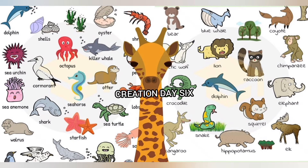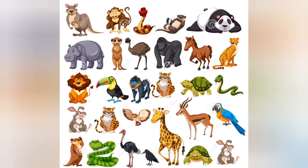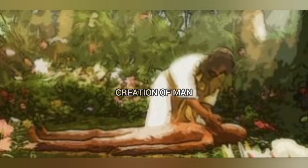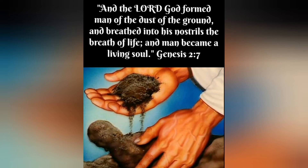Creation Day 6. Genesis chapter 1 verse 24 to 31. God creates all the creatures that live on dry land. This includes every type of creature not included on previous days, and man. God declares this work good. When God was creating man, he took counsel with himself. God said, 'Let us make man in our image, in our likeness.' Genesis 1:26.